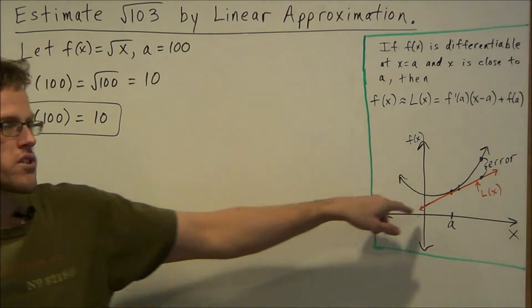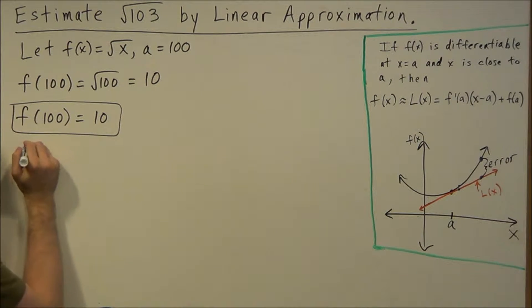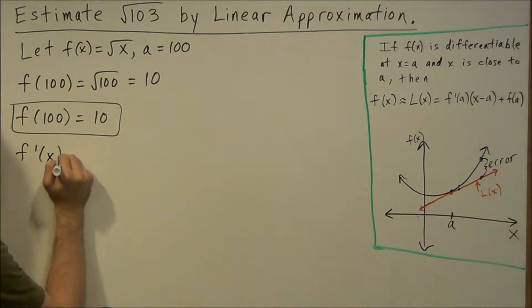Now the next thing we need to know is the slope of our tangent line. So to find our slope, we need to calculate the derivative of f(x). So f prime of x,